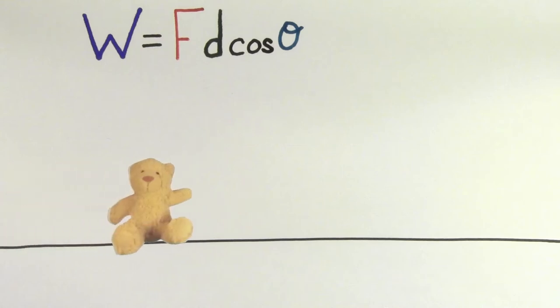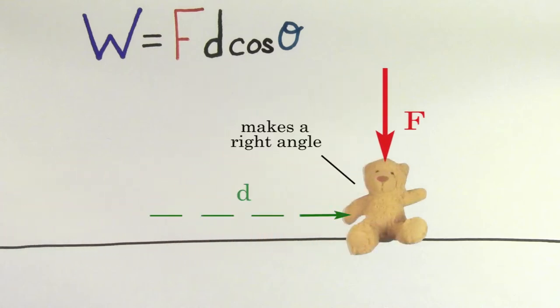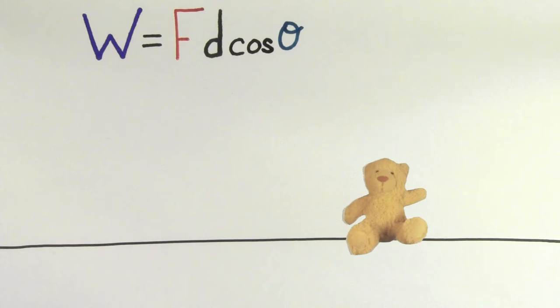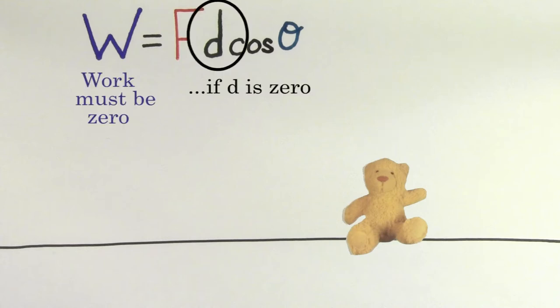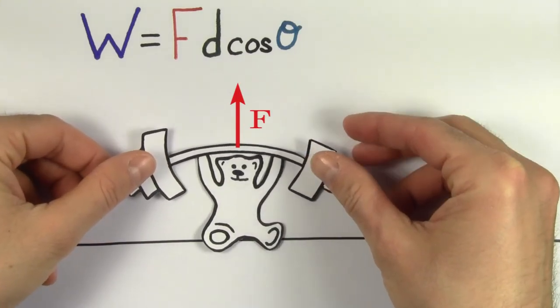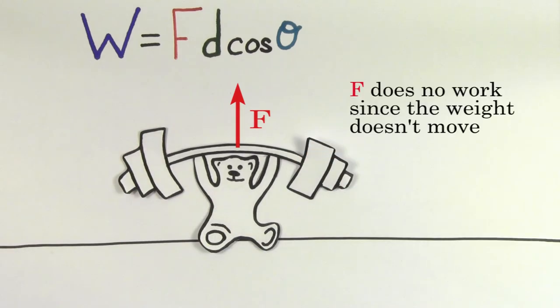If a force points in a direction that's perpendicular to the displacement, the work done by that force is zero, which means it's neither giving nor taking away energy from that object. Another way that the work done by a force could be zero is if the object doesn't move, since the displacement would be zero. So the force you exert by holding a very heavy weight above your head does not do any work on the weight since the weight is not moving.